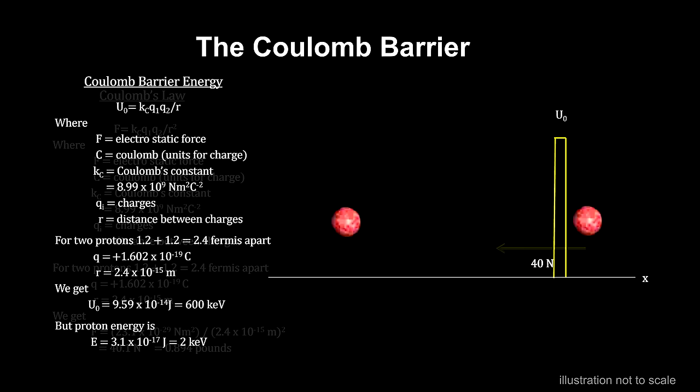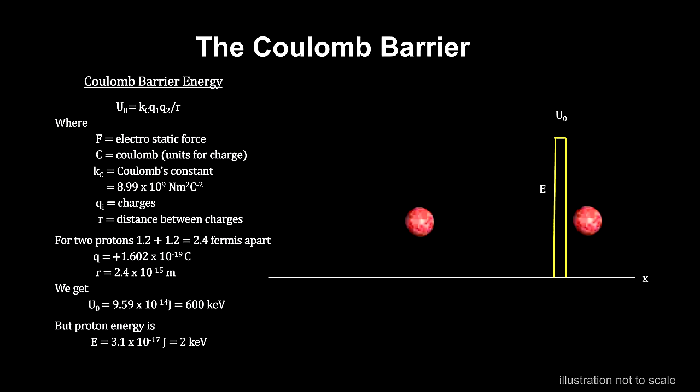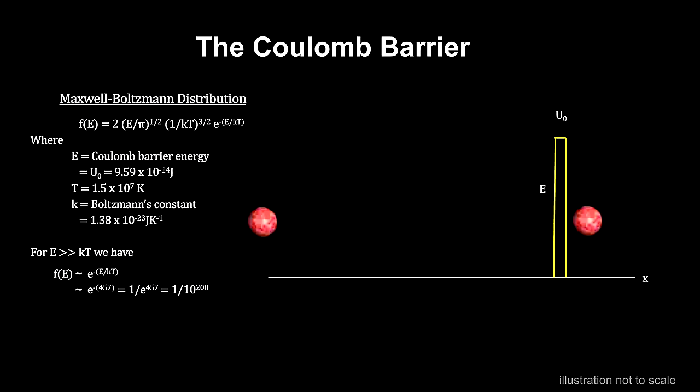If we look at it from a classical energy point of view, we see that proton average energy, at 15 million Kelvin, is just not enough to overcome the potential energy barrier. In fact, the energy required to overcome the barrier is 300 times greater than the average energy of the protons. To understand how often we can expect a proton to have the barrier's energy at the Sun's temperature, we use probability distributions developed by James Maxwell and Ludwig Boltzmann in the mid-1800s. This analysis shows that only one out of 10 to the two hundredths collisions would cross the Coulomb barrier. That's almost as good as none.